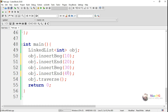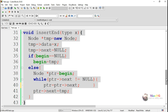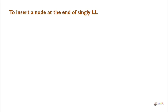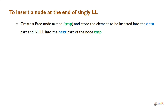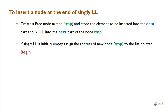We execute and verify the insertion. To insert a node at the end of a singly linked list: first, create a new node named temp and store the element to be inserted into the data part, and null into the next part. Then check if the linked list is initially empty. If it is empty, assign the address of the new node temp to the list pointer begin, since temp will be the only node added.